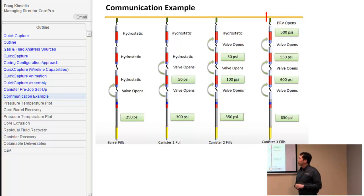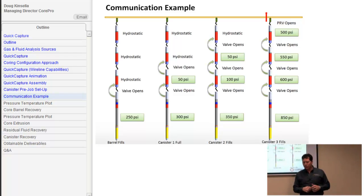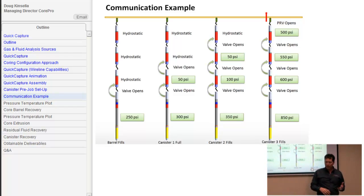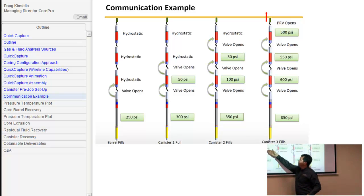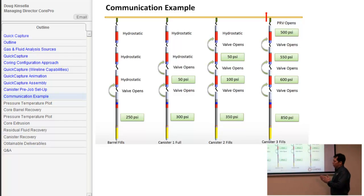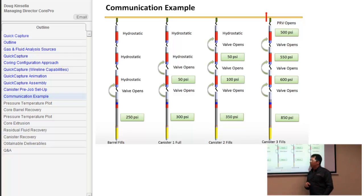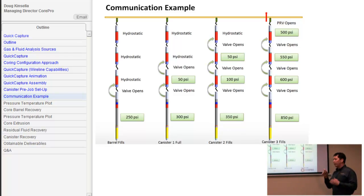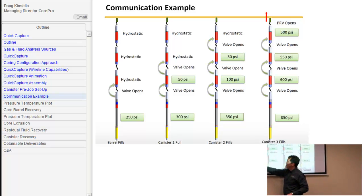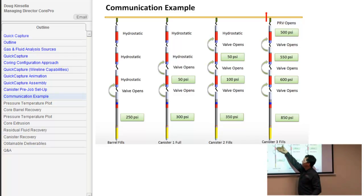There's often a little confusion about the tool, so we put this slide together to walk through what happens. We cut the core, fill the barrel, and close the valve. On the way out of the hole we're building pressure inside the barrel. When the barrel gets to 250 psi greater than the pressure outside, the valve opens and we start to fill the first canister. As the canister fills, the piston moves to the end and becomes a solid volume that will increase in pressure. Eventually we crack the valve and start to fill the second canister. Pressure relief valves sense the difference in pressure from one side to the other — we only needed 250 psi in the barrel to fill the first canister, but once we get 50 psi in the first canister, we actually need 300 psi to open. It's a populating effect.